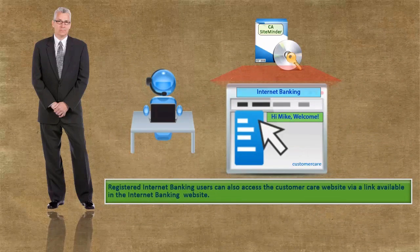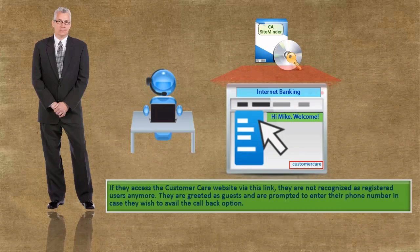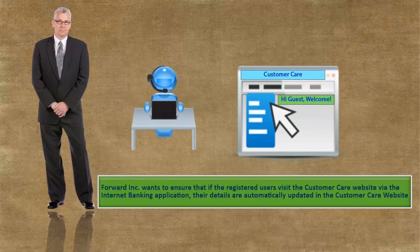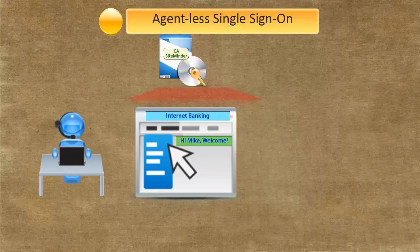visitors are greeted as guests and not by their name. Registered internet banking users can also access the customer care website via a link available in the internet banking website. If they access the customer care website via this link, they are not recognized as registered users anymore. They are greeted as guests and are prompted to enter their phone number in case they wish to avail the call back option. Forward Incorporated wants to ensure that if the registered users visit the customer care website via the internet banking application, their details are automatically updated in the customer care website.